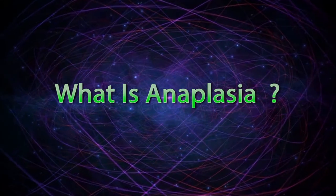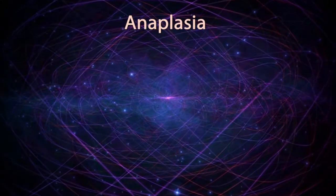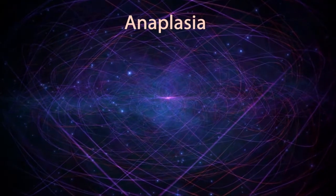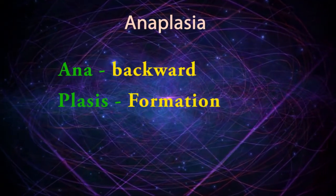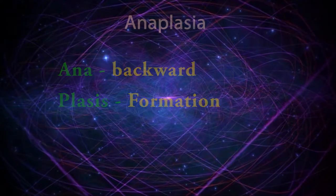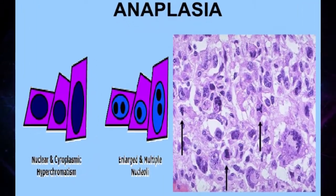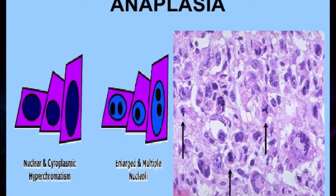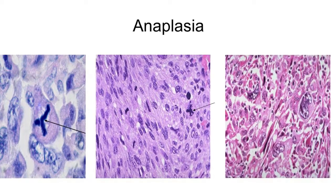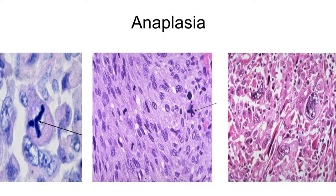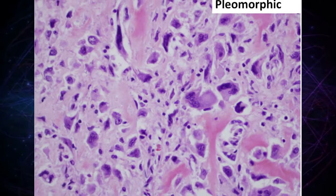What is anaplasia? The term comes from ancient Greek: 'ana' means backward, 'plasia' means formation. Anaplasia is a condition which forms highly undifferentiated cells. These abnormal cells are a marker for cancer or pre-cancer. Anaplastic cells show marked pleomorphism.